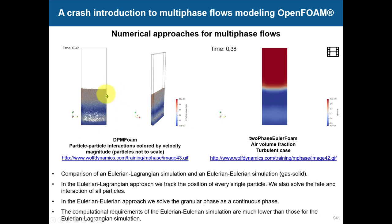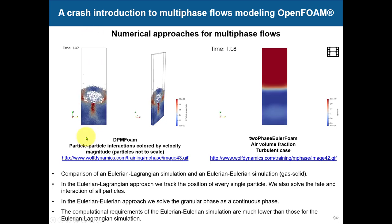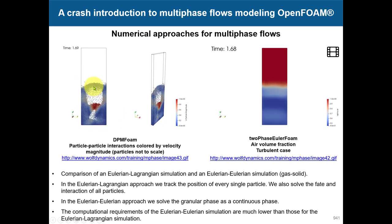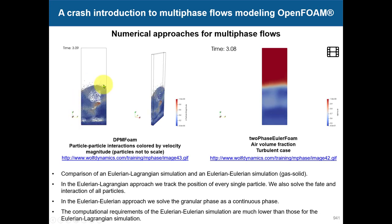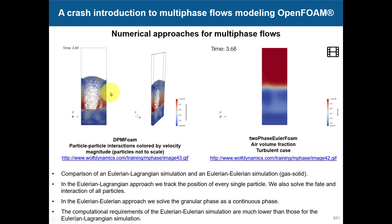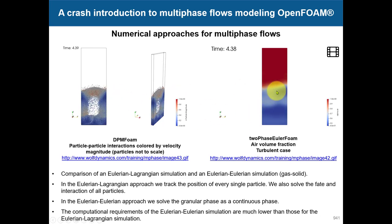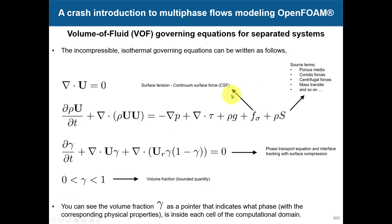In the Lagrangian particles approach, flow comes in and moves the particles, which interact with each other, with the walls, and modify the flow while the flow modifies their trajectories — this is the fully coupled approach and can be expensive. With around 40,000 particles it can be solved, but as particle count increases it may be better to use the Kinetic Theory of Granular Flow. Both approaches show similar behavior.